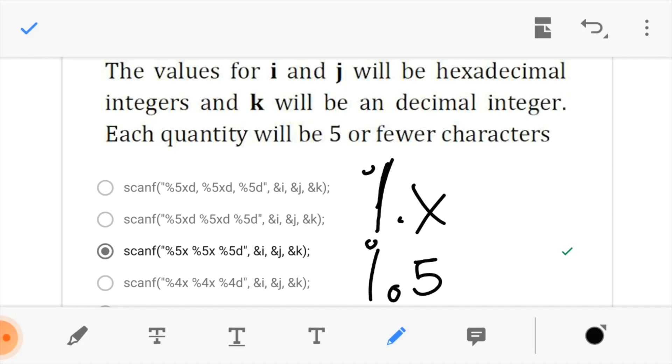i and j would be %x. And then k would be a %d. So k would be a %d. And since we are setting it to five, this is our answer.